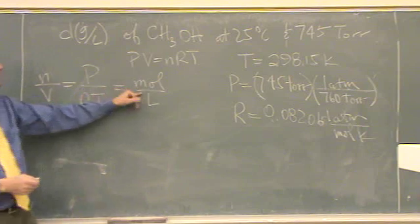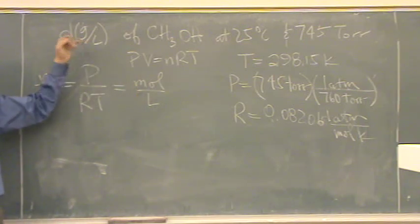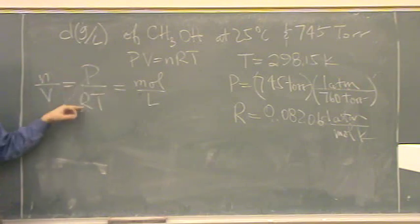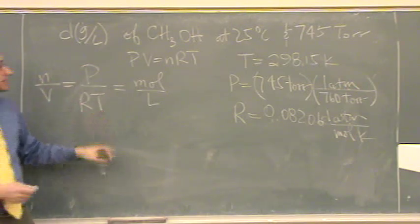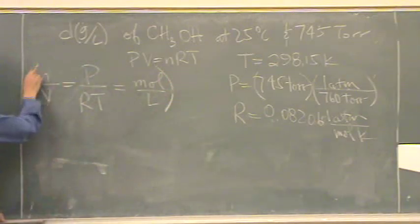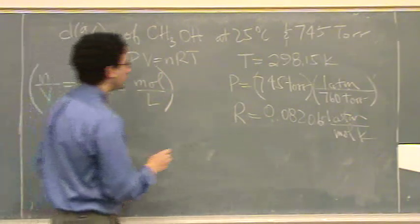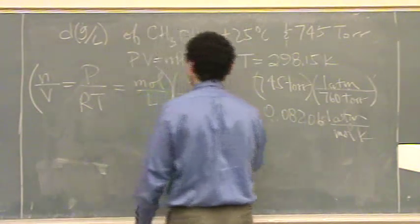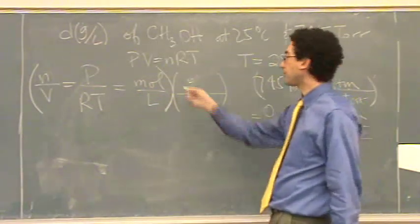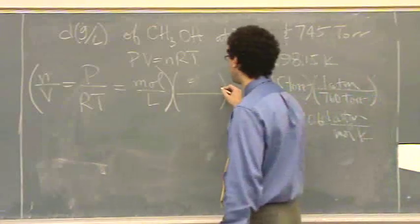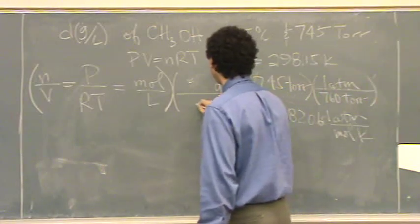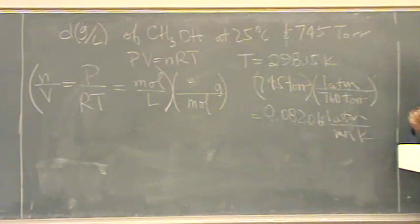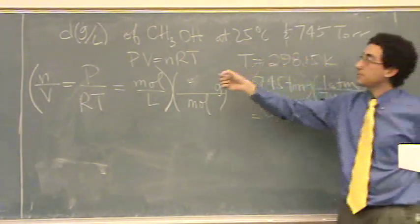I don't want moles per liter, I want grams per liter. Yeah, we just convert. So once you do P over RT, you just convert by multiplying this monster here. A little space. Multiplying by what? To get grams per liter. The molar mass, grams per mole. Of what compound? Yeah, CH3OH, which is methanol.